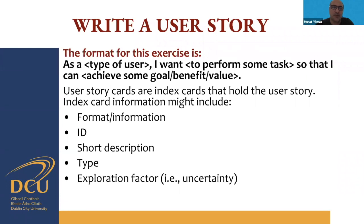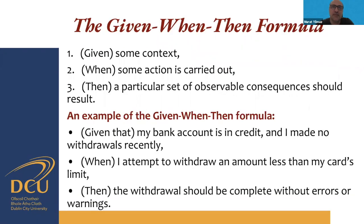When writing a user story, the format is: as a type of user, I want to perform some task so that I can achieve some goal or value. User story cards are index cards holding information such as ID, short description, type, and exploration factor — representing uncertainty about whether something will be a problem during development. Another format is given/when/then: given some context, when some action is carried out, then a particular set of observable consequences should result. For example: given my bank account is in credit and I made no withdrawals recently, when I attempt to withdraw an amount less than my card's limit, then the withdrawal should complete without errors or warnings.